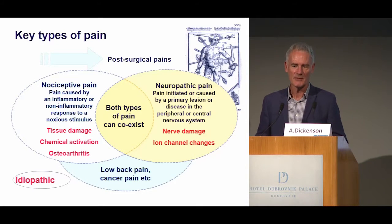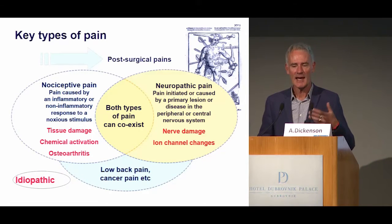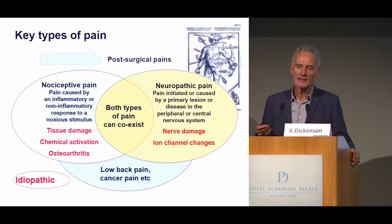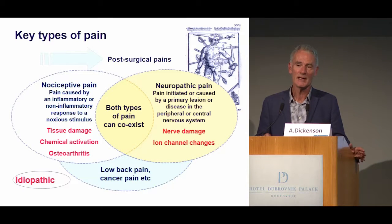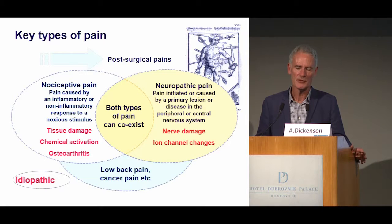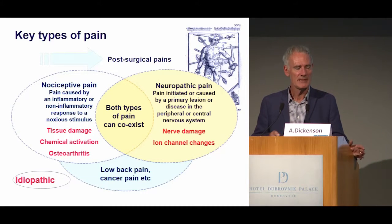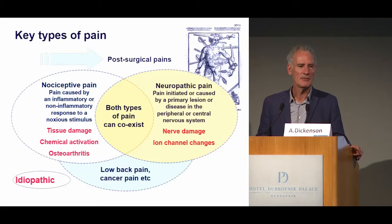What's been called nociceptive pain is basically an inflammatory or non-inflammatory response with the primary driving event being damage to tissue and chemical activation of pain endings in that area. It contrasts to neuropathic pain where tissue is normal, but there's a dysfunction or a lesion or a disease of peripheral nerves, and so it becomes ion channel changes. Things like low back pain and cancer pain can be combinations of the two. Osteoarthritis is a classical nociceptive pain, but I'm going to give you evidence that there could be in certain patients some neuropathic components, particularly in severe osteoarthritis, and the consequences for treatment.